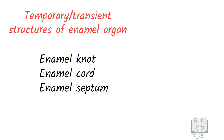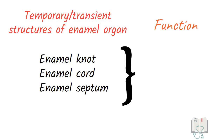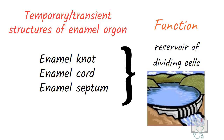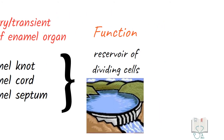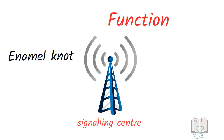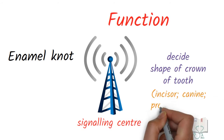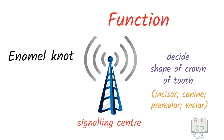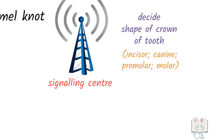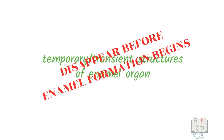The enamel knot, cord, and septum act as a reservoir of dividing cells in a rapidly growing enamel organ. Additionally, the enamel knot acts as a signaling center and plays an important role in deciding what shape of tooth is to be formed. All these structures are temporary and disappear before enamel formation begins.